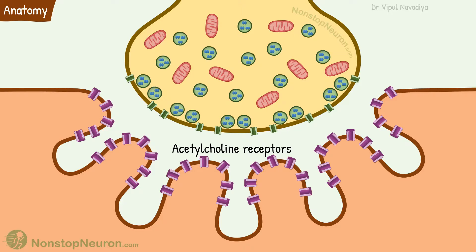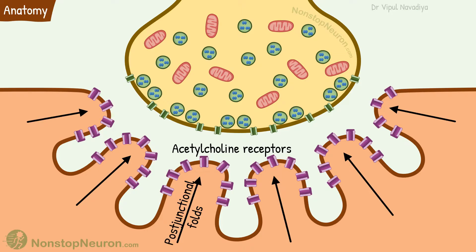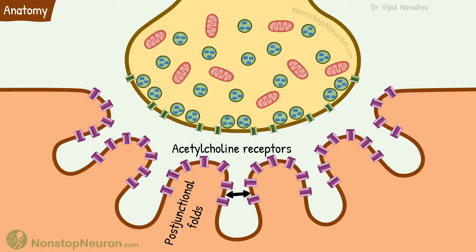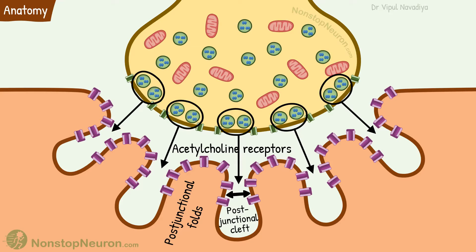The postsynaptic membrane contains acetylcholine receptors. These receptors are ligand-gated sodium channels. The postsynaptic membrane has extensive folding called postjunctional folds. They increase the surface area of the postsynaptic region so that more receptors can be accommodated. In between adjacent folds, we have secondary postjunctional clefts. These clefts lie immediately below the active zones, and the receptors are located almost entirely near the mouth of these clefts. Because of these strategic arrangements, the acetylcholine is released in the vicinity of the receptors and it acts rapidly.